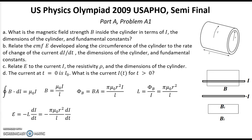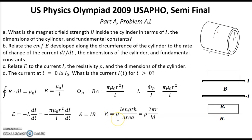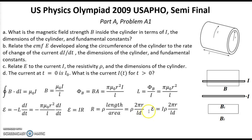Question C: Relate the EMF to the current I, the resistivity rho and the dimensions of the cylinder. Now we can describe this EMF using the regular Ohm's law. According to Ohm's law, EMF equals current multiplied by resistance. The resistance can be found from the regular formula: it equals resistivity multiplied by length and divided by cross-sectional area. In our case the length is 2 pi R and the cross section is L multiplied by D. The EMF can be rewritten accordingly. This is the equation for EMF for part C.